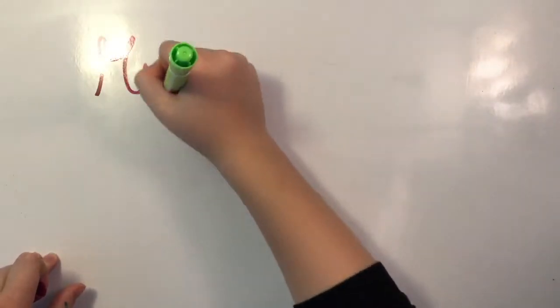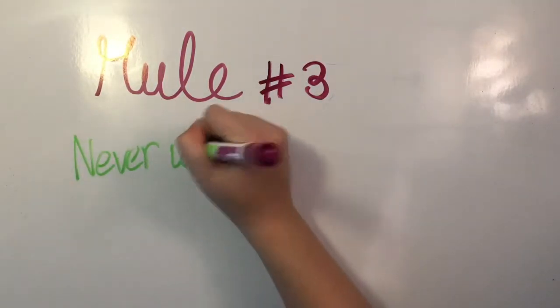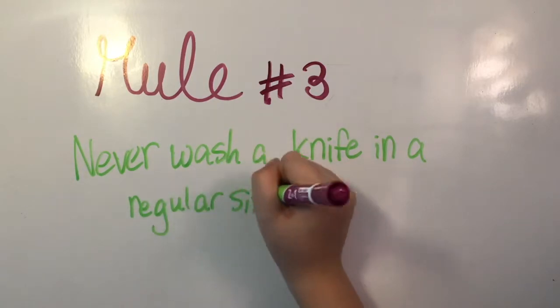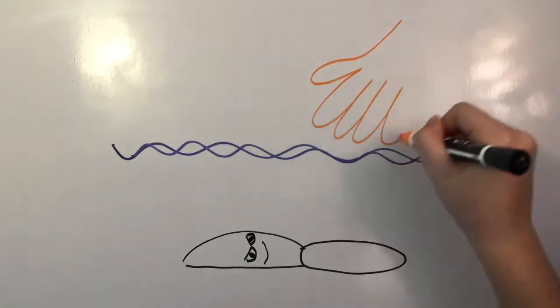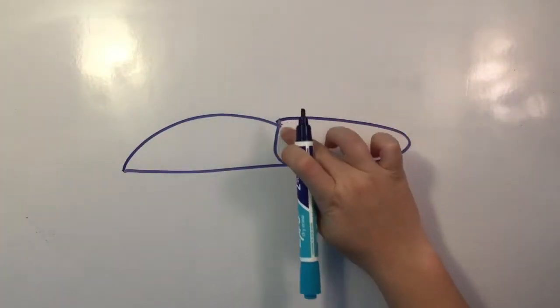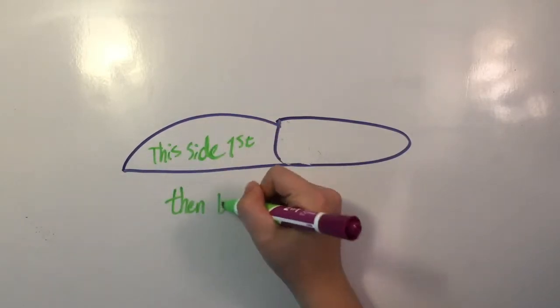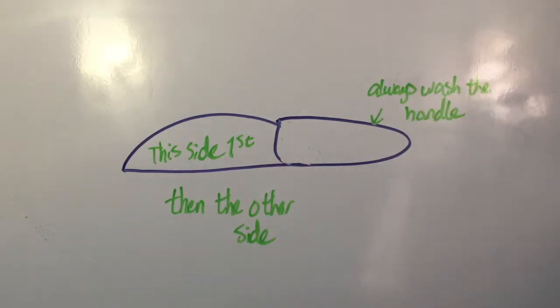Rule number three, never wash a knife in a regular sink, unless you're at home. If you're at home, make sure that the person who is washing dishes knows that there is a knife in the sink. Knives should always be washed in a knife sink, so no one cuts themselves on an unexpected knife under water. When washing a knife, always point the blade away from you and clean it one side at a time. Always make sure to wash the handle as well to ensure utmost cleanliness.